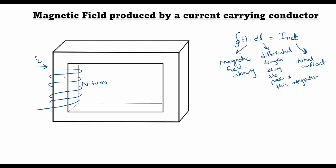Since we have a magnetic core here, we assume that all of the magnetic field produced remains inside this magnetic material, and thus the path length along which we carry out this integration is the length around the core, which is called LC, the mean path of integration.